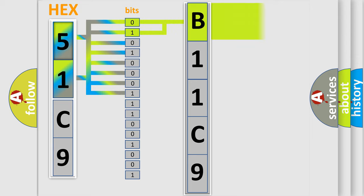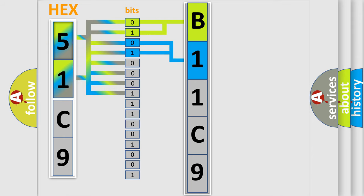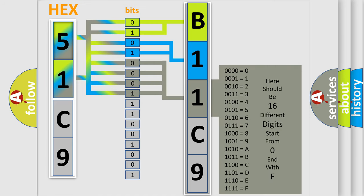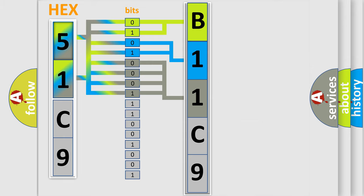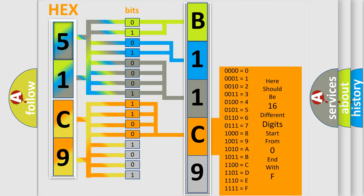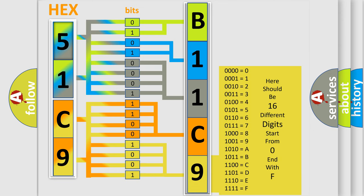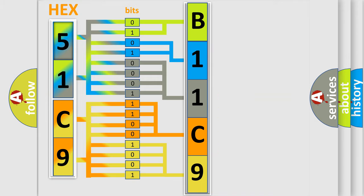By combining the first two bits, the basic character of the error code is expressed. The next two bits determine the second character. The last four bits of the first byte define the third character of the code. The second byte is composed of a combination of eight bits: the first four bits determine the fourth character, and the last four bits define the fifth character. A single byte conceals 256 possible combinations. We now know in what way the diagnostic tool translates the received information into a more comprehensible format.